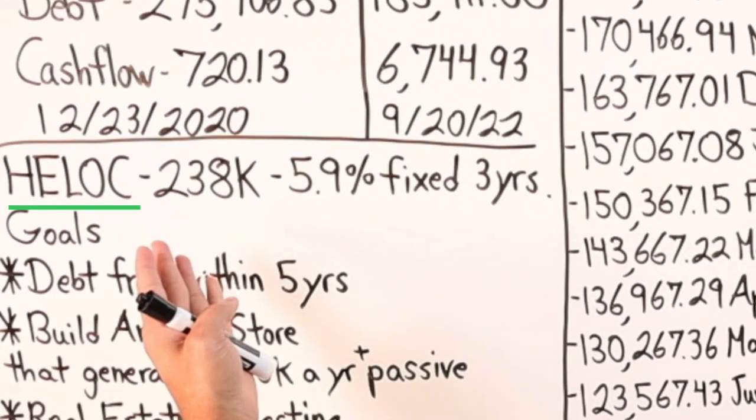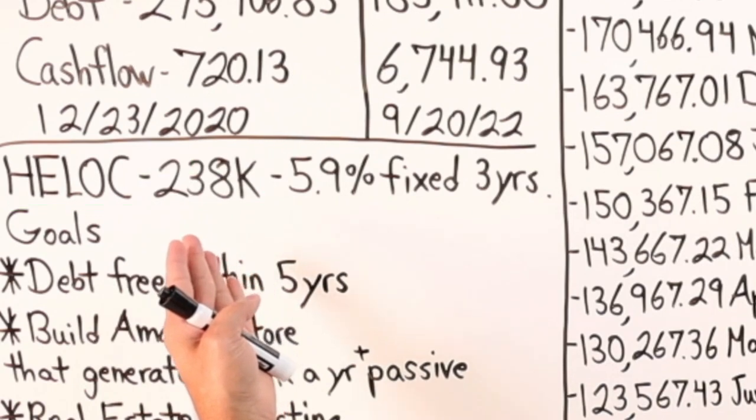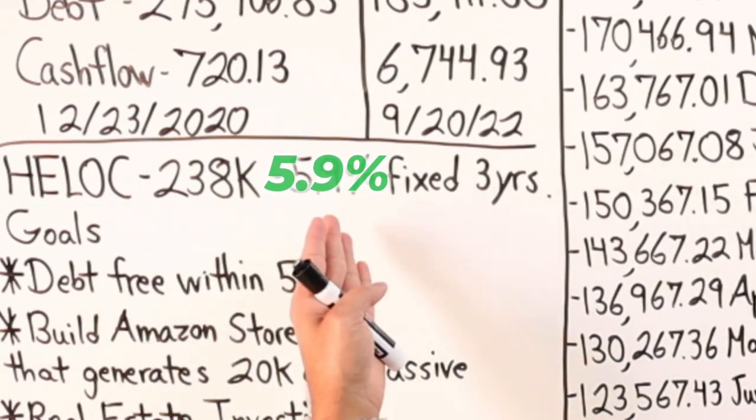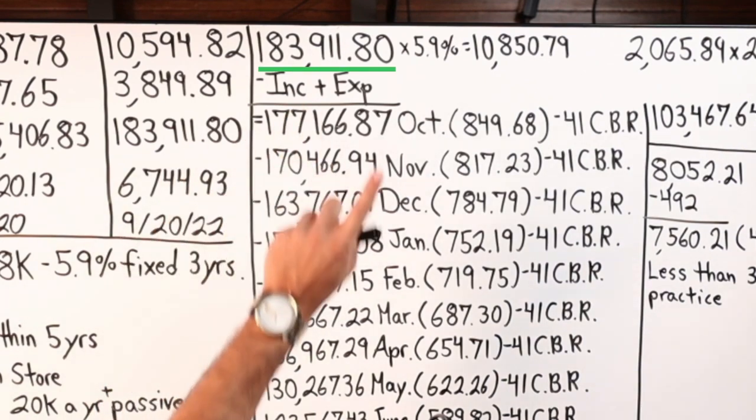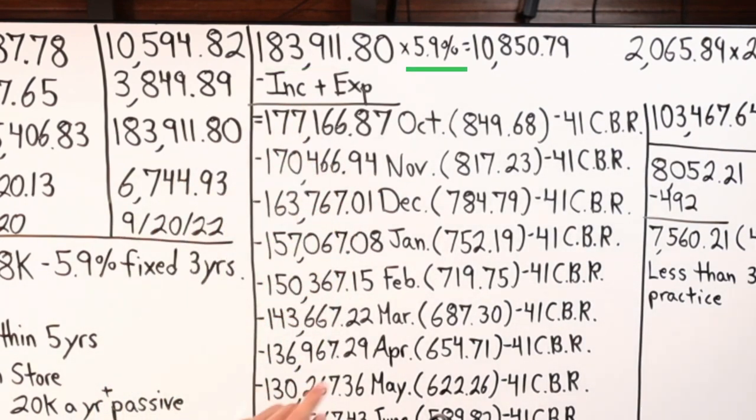First lien HELOC, $238,000 credit limit, 5.9% fixed interest rate for the next three years, current balance $183,911.80. You times that by 5.9%, you're going to get $10,850.79 in total interest if all I did was make interest only payments on the first lien HELOC without making any principal payments to the balance.